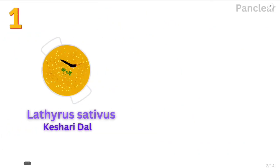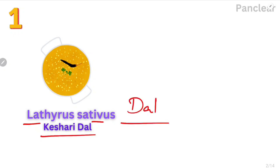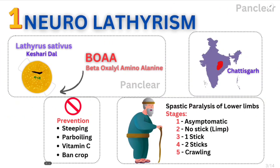The first disease is neurolathyrism. It is caused by lathyrus sativus — that is nothing but a cassary dal. When we consume this dal, we get certain types of toxins — that is adulteration. This dal, which is healthy, can be toxic. The toxin is BOAA — beta-oxalyl-amino-alanine. This toxin is called lathyrus sativus toxin.